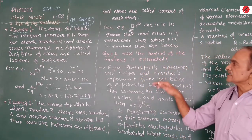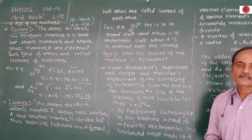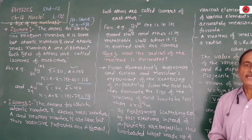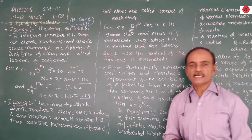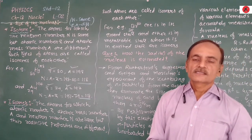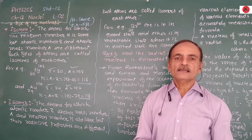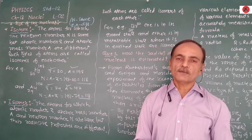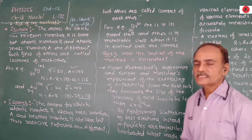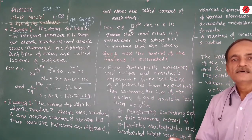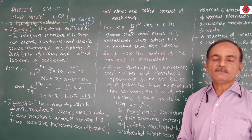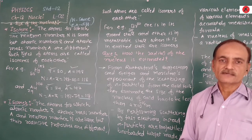After that, how the radius of the nucleus is estimated. Rutherford suggested the radius of the nucleus from the scattering of the alpha particle experiment performed by Geiger and Marsden. At that time, the radius of the nucleus was estimated at approximately 10⁻¹⁵ meters.